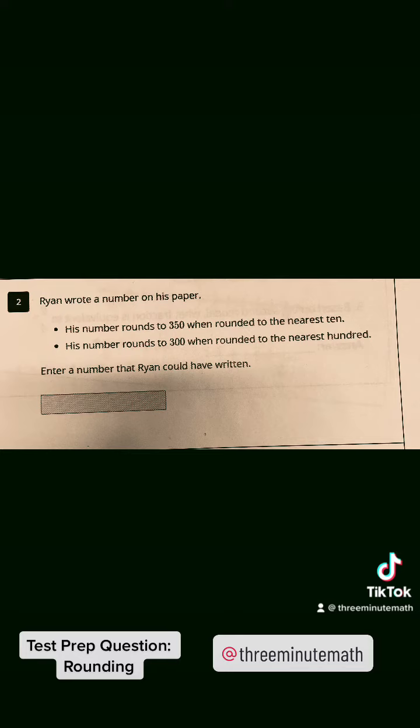Ryan wrote a number on his paper. His number rounds to 350 when rounded to the nearest 10. His number rounds to 300 when rounded to the nearest 100. Enter a number that Ryan could have written.